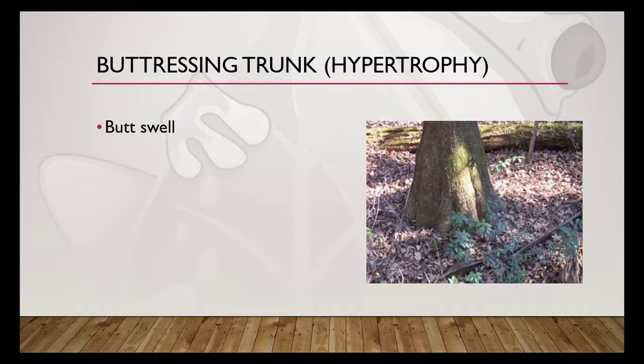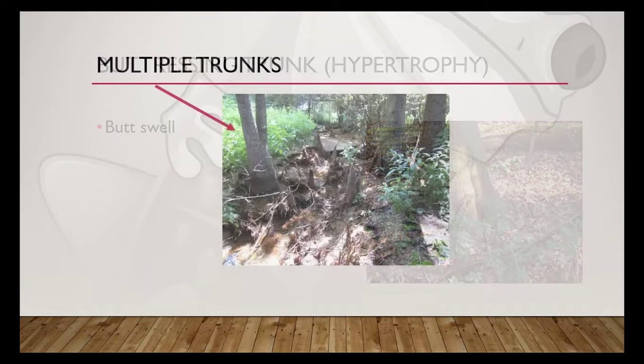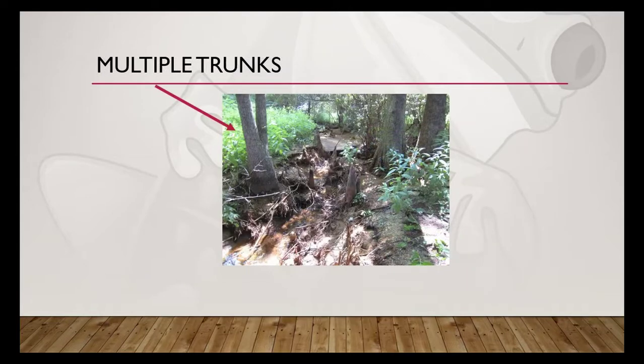Now we can move on to another type of adaptation not necessarily dealing with roots. This is a condition called hypertrophy — this term means an increase in the size of an organ without an increase in cells. An example is tree buttressing, also called butt swell. You'll see this in wetland plants when the tree trunk looks swollen at the base. The purpose is to make bigger air spaces, allowing for more movement of gases within the trunk and roots, and also to help support the tree in wet, soggy soil.